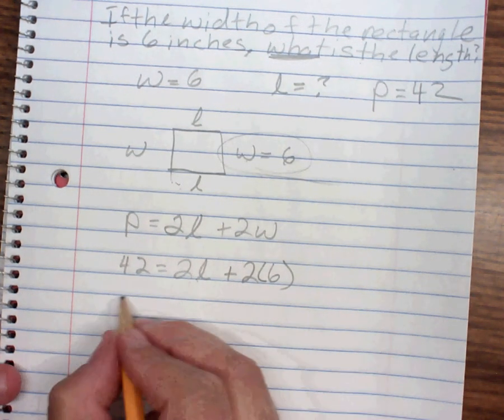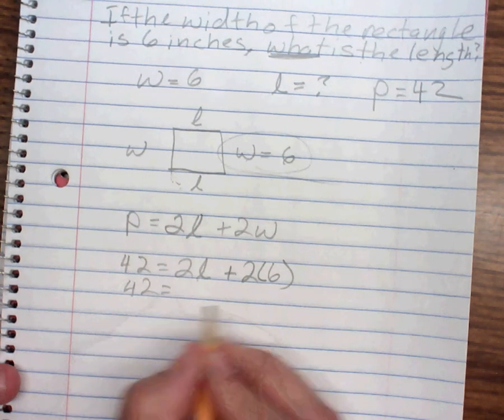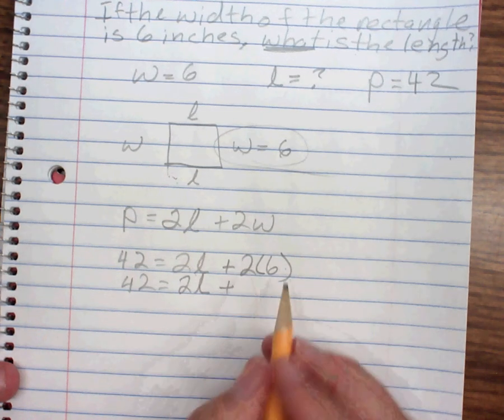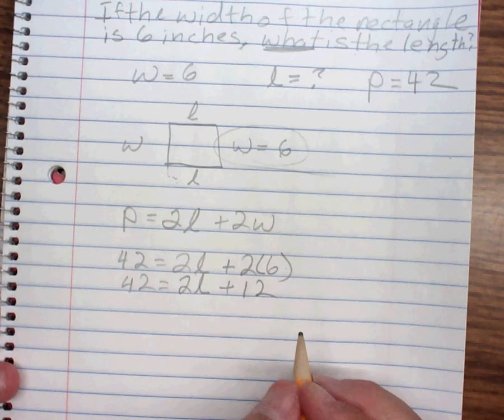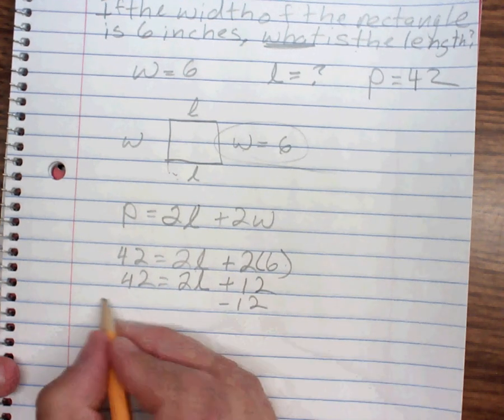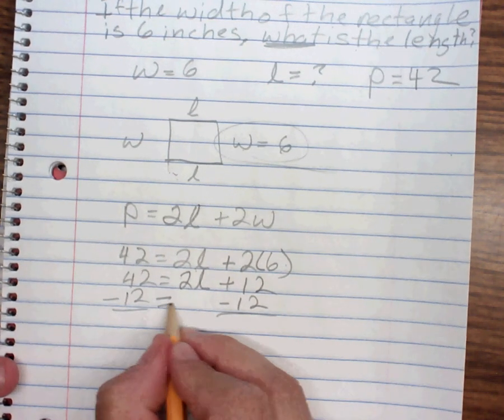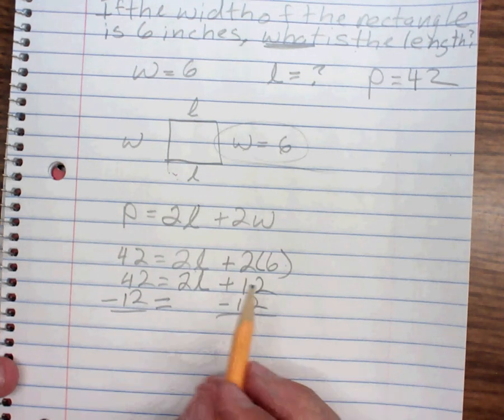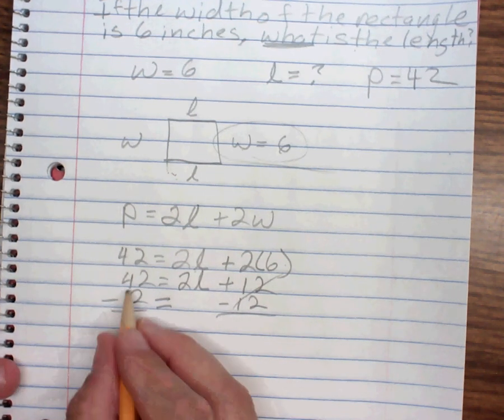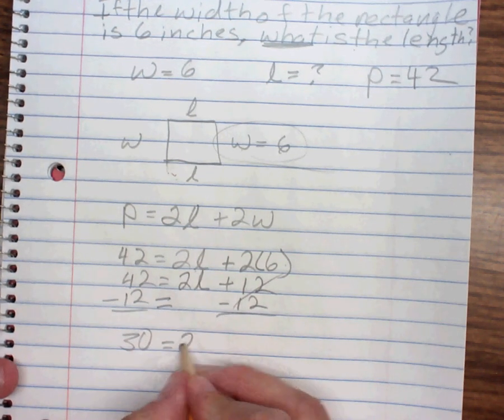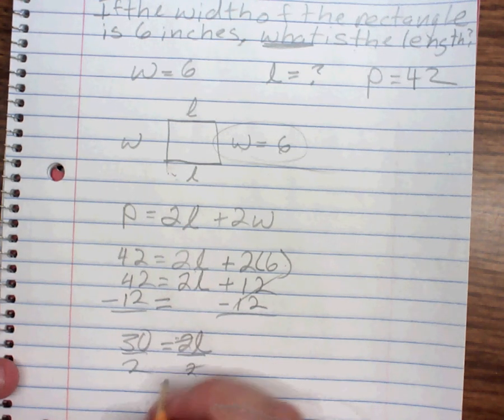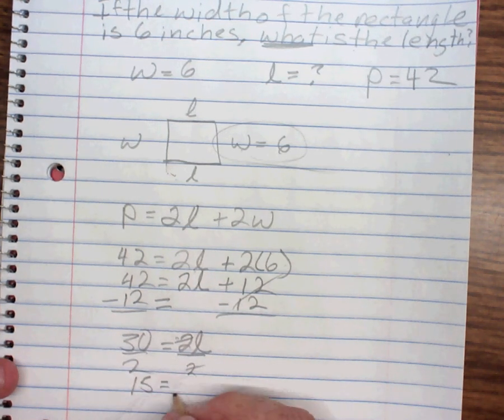All right, next line. 42 is equal to 2L. 2 times 6 is 12. There's my equation. Let's solve. I'm going to use the subtraction property of equality. So these cancel. I get 30 is equal to 2L. Divide both sides by 2. I get 15 is equal to L.